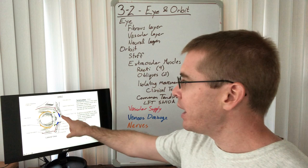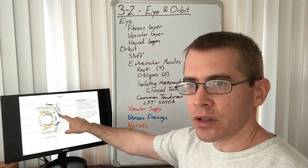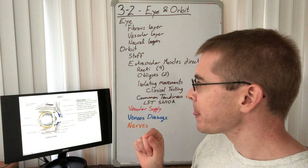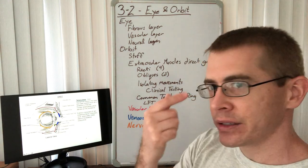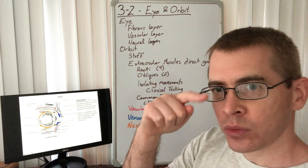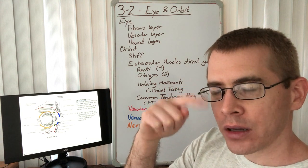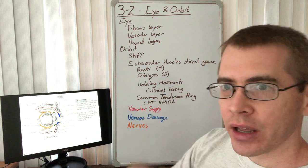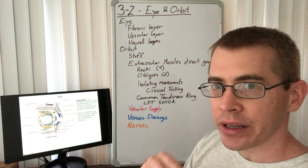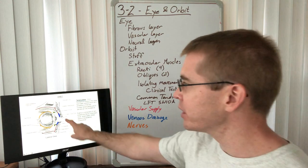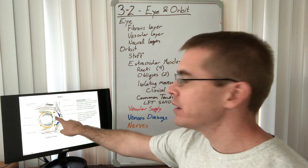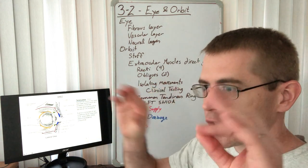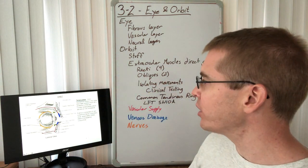The eyelids have harder connective tissue plates called tarsal plates. These function like windshield wipers that wipe away dust, debris, or tears as we blink. They rest against the surface of the eye and brush substances out of the eye, which is a very critical function.